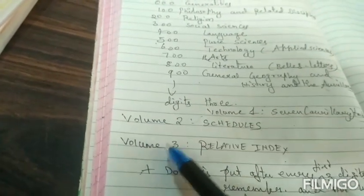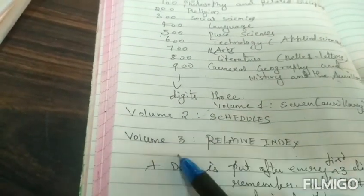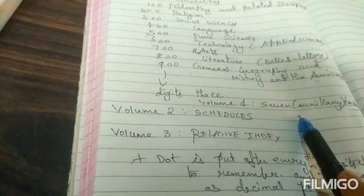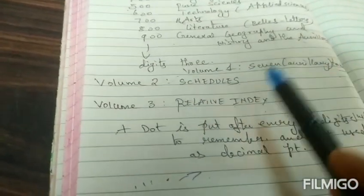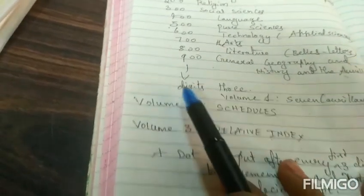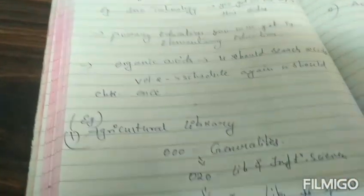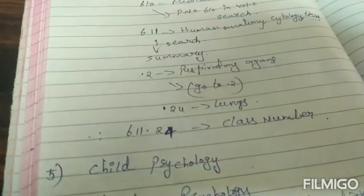You will be finding in volume 2 schedule, volume 3 relative index, and volume 1 is the table of seven tables auxiliary tables you will find. And dot is very important in this DDC notation. After every three digits one dot is put.